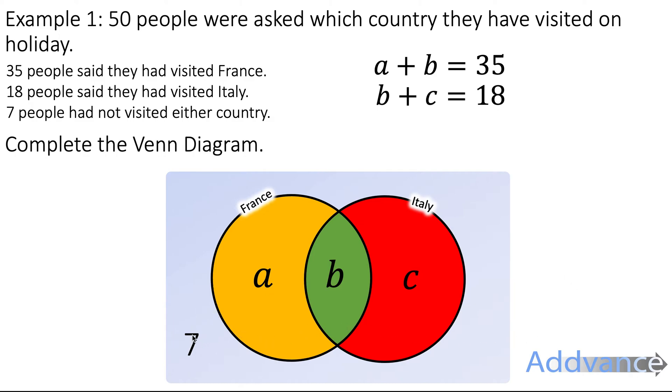But we know that 7 are on the outside. So A plus B plus C would be 50 minus 7. So 43. There are 43 people left inside these two circles. So A plus B plus C is 43. But we know that B and C together is 18. So here we can replace the B plus C with 18. I'm substituting 18 in for B plus C. A plus 18 is 43. So we take 18 on both sides. We get A is equal to 25.